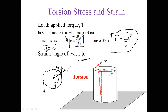The angle of twist is a change in angle. If you concentrate on a point on a circle — at zero time the point is at one position, after you apply the force it moves to a new position — that angular change is the angle of twist, shown as phi.